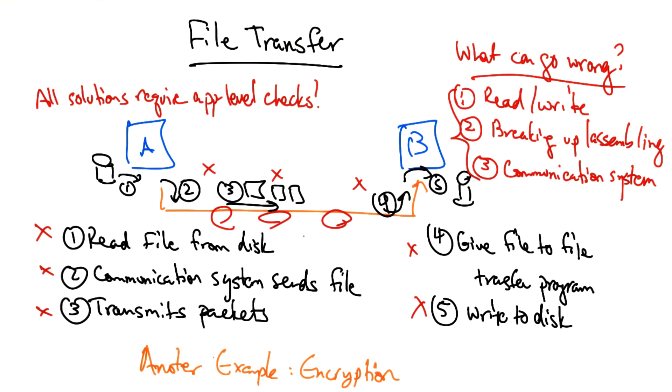Another example where the end-to-end argument applies is with encryption, where keys are maintained by the end applications and ciphertext is generated before the application sends the message across the network.